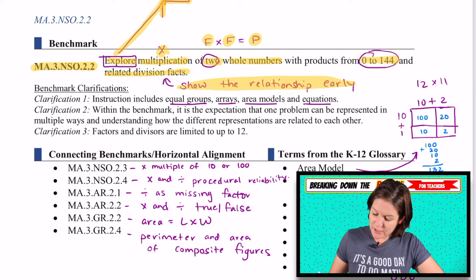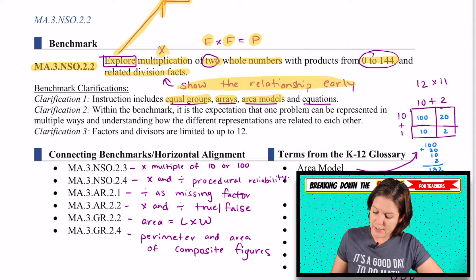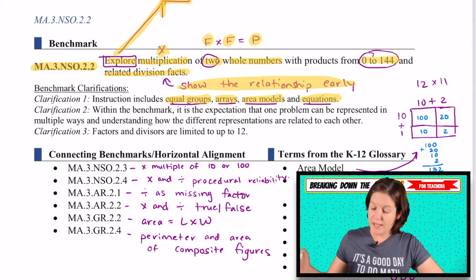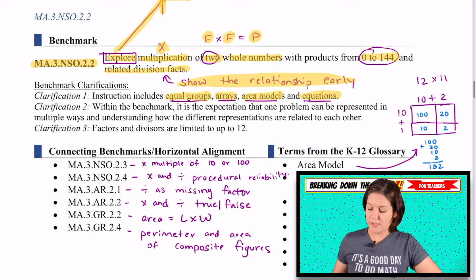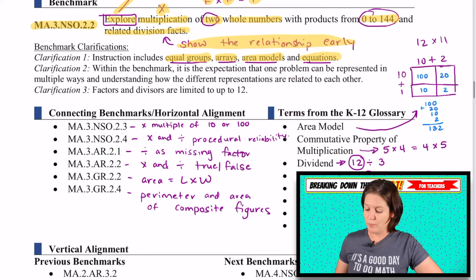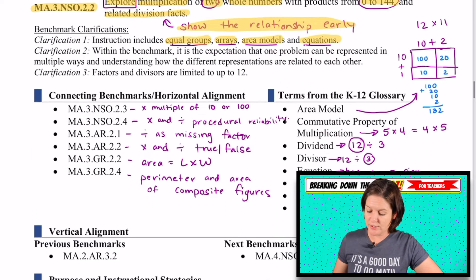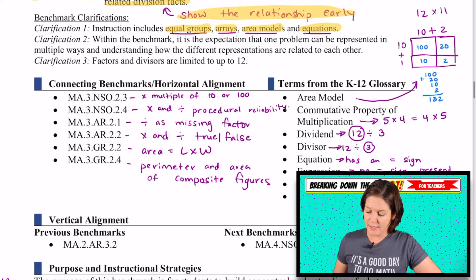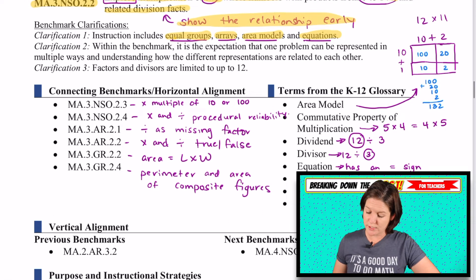We need to make sure with multiplication that we have equal groups, arrays, area models, and equations. And we will make sure that we point out those in this Breaking Down the Best episode today.